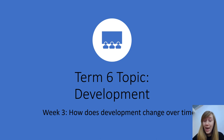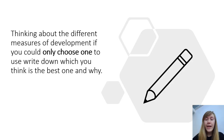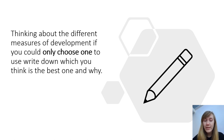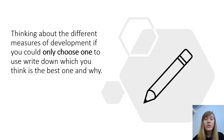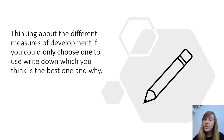This week we're looking at how a country's development changes over time. Have a pen and paper ready. I want you to think back to the work we did last week and the different measures of development. If you could only choose one measure for the rest of your life, pick one, write down which one it would be and why. Pause the video and do that now.